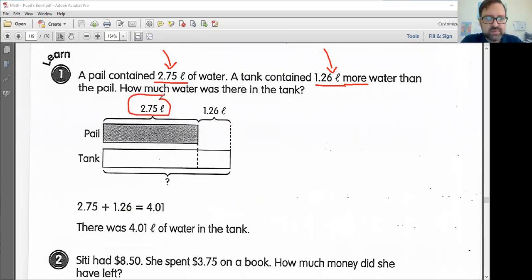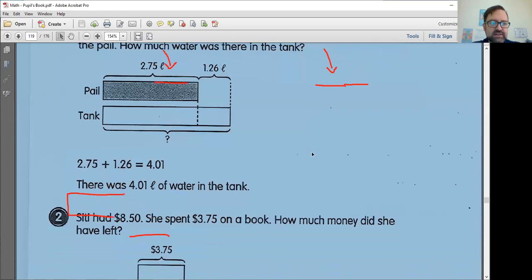Well, we know that we know the amount of water in the pail. And then we know how much more water there is in the tank. So they have drawn you a really nice model here. Here's our water in the bucket or the pail, and then we have 1.26 because that's how much more water is in the tank. Now it seems I can figure this out. This is just an addition problem. 2.75 plus 1.26 equals 4.01. There it was. 4.01 liters of water in the tank. Let's continue.